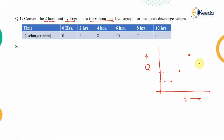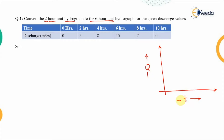The hydrograph is a plot of discharge versus time. At zero time there was zero discharge; at 2 hours the discharge is 5 units; at 4 hours it raised to 8; at 6 hours it is 15; at 8 hours it reduced down to 7; and at 10 hours it is again 0.